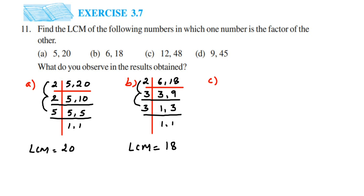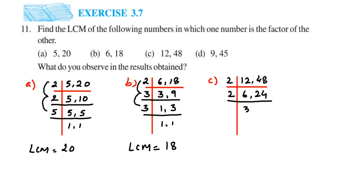The next question is 12 and 48. Starting with 2: 2 sixes are 12 and 2 twenty-fours are 48. Both again go in the 2 times table, so 2 threes are 6 and 2 twelves are 24. 12 still goes in the 2 times table, so we keep going — 2 sixes are 12 — until at least one number is no longer divisible by 2, then we shift to the next prime number, 3.